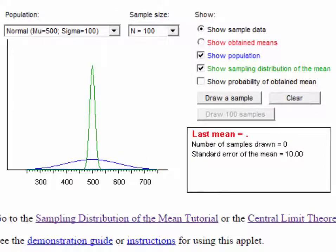Okay, here is the WISE sampling distribution of the mean applet. You can download this applet and play along with me as we go through the rest of this exercise. We have a choice here of several different populations. We'll just use the default which has a mean of 500 and a standard deviation of 100 and has a normal shape. And we'll also take the default of 100 cases as the sample size. For now, let's uncheck the box that says show the sampling distribution of the mean. We will look at that in much more detail shortly. But what we see now is an illustration of the population distribution with the mean of 500 and a standard deviation of 100.